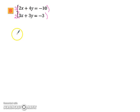we now end up with 6x plus 12y equals negative 30. And, for the second equation, we end up with 6x plus 6y equals negative 6.